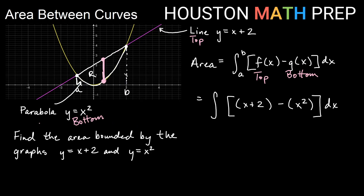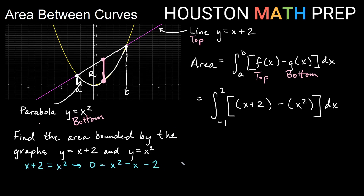Now we find our bounds using the intersection points — where the line and parabola cross. Looking at the graph, it appears b is 2 and a is negative 1. To verify, we set x plus 2 equal to x squared, move everything to one side to get 0 equals x squared minus x minus 2, and factor. The solutions confirm the intersection points are negative 1 and positive 2.